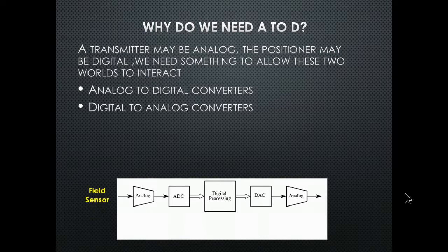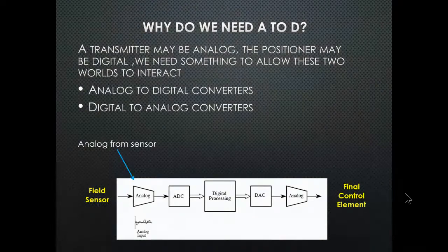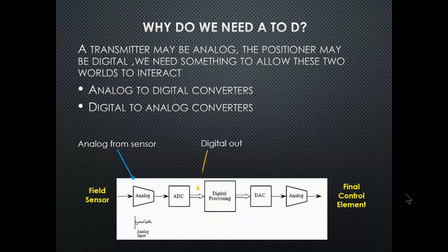A field sensor is the first thing — that's analog — and it goes all the way to the final control element (FCE). The analog input is shown as squiggly lines in a graph because it's an infinite number of values. It goes through the analog to digital converter, and the digital output shows the input digitized.